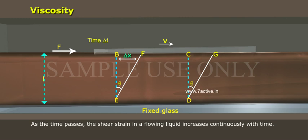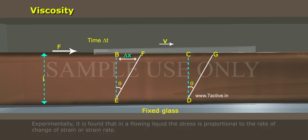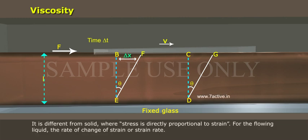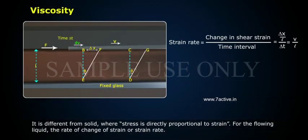As time passes, the shear strain in a flowing liquid increases continuously with time. Experimentally, it is found that in a flowing liquid, stress is proportional to the rate of change of strain, or strain rate. This is different from a solid, where stress is directly proportional to strain. For the flowing liquid, the rate of change of strain equals (delta X / L) / delta T, which equals V divided by L.